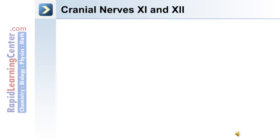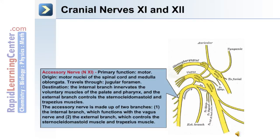The 11th cranial nerve is the accessory nerve. Its primary function is motor, and its origin is the motor nuclei of the spinal cord and the medulla oblongata. This nerve travels through the jugular foramen. The internal branch innervates the voluntary muscles of the palate and pharynx, and the external branch controls the sternocleidomastoid and trapezius muscles. The accessory nerve is made up of two branches: an internal branch which functions with the vagus nerve, and an external branch which controls the sternocleidomastoid and trapezius muscles.